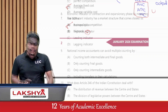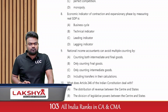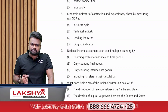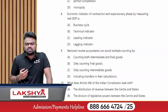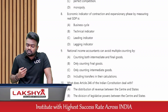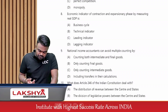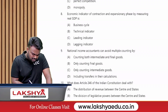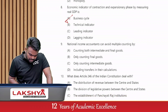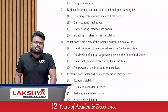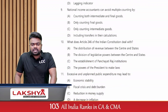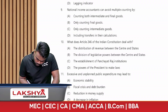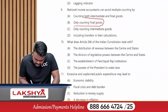Economic indicator of contraction and expansionary phase measured by real GDP: this concept was discussed in the chapter Business Cycle. The answer is business cycle. National income accountants can avoid multiple counting by only counting final goods — ignoring intermediary goods. The answer is option B.